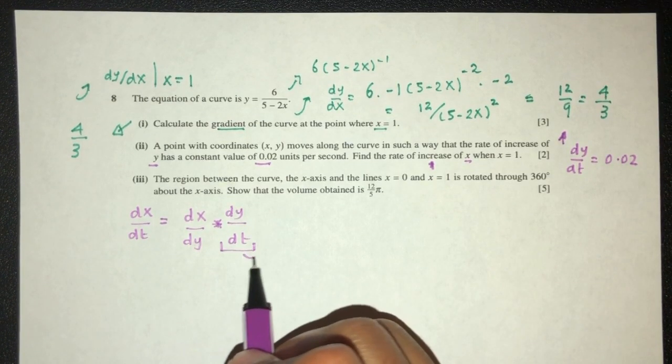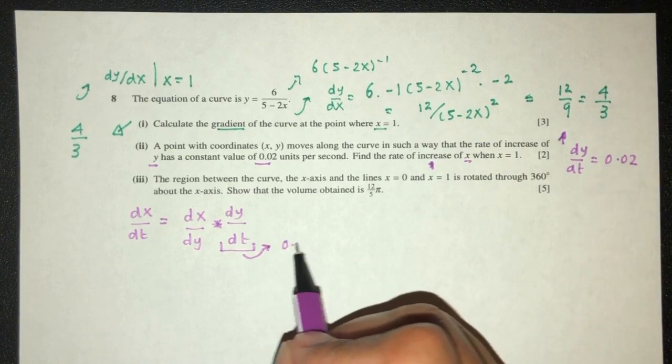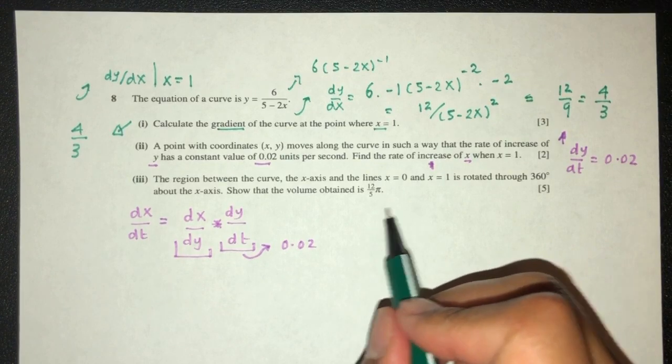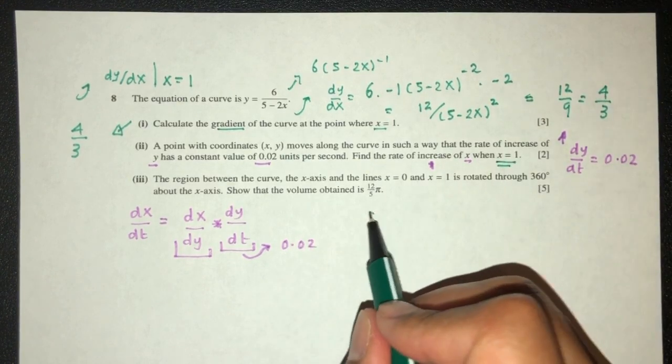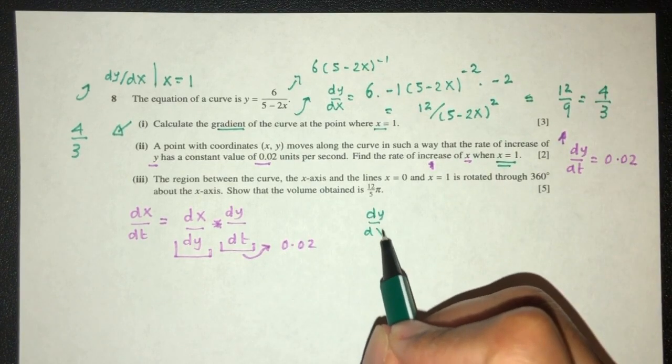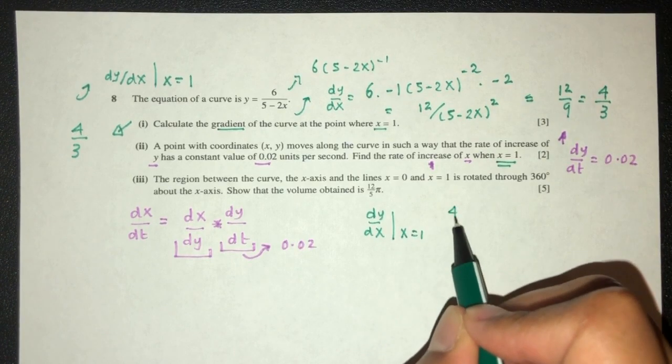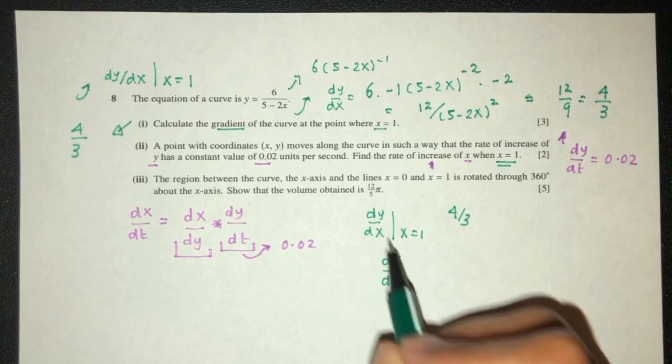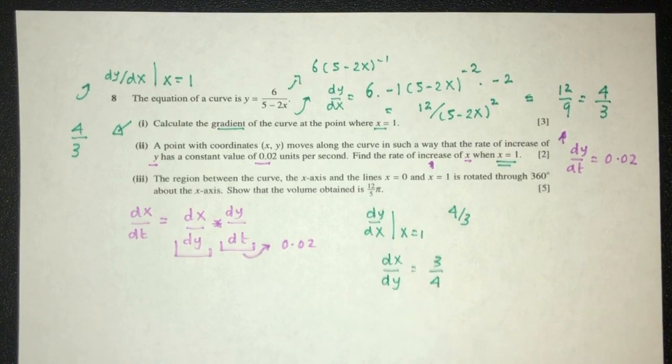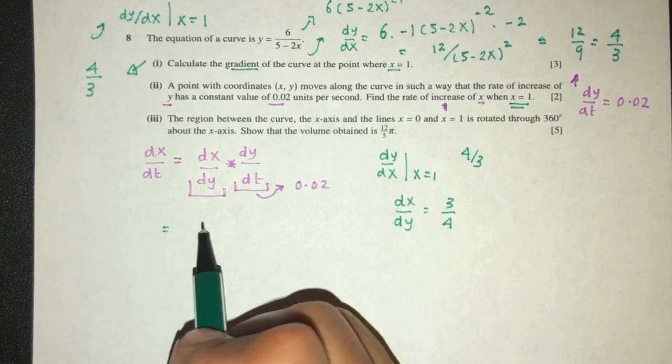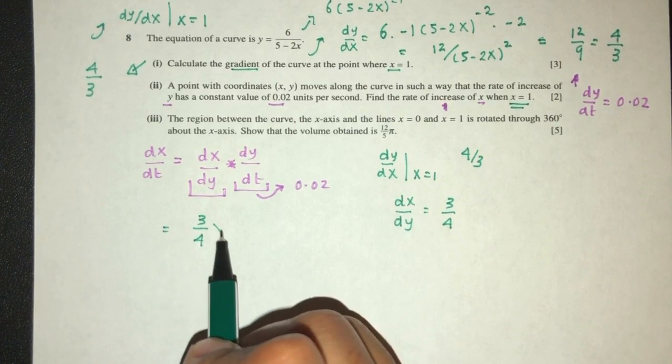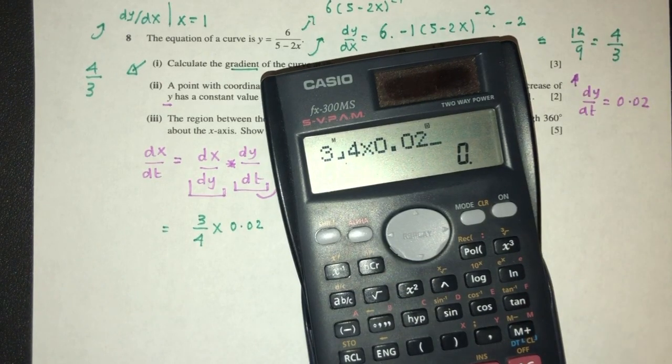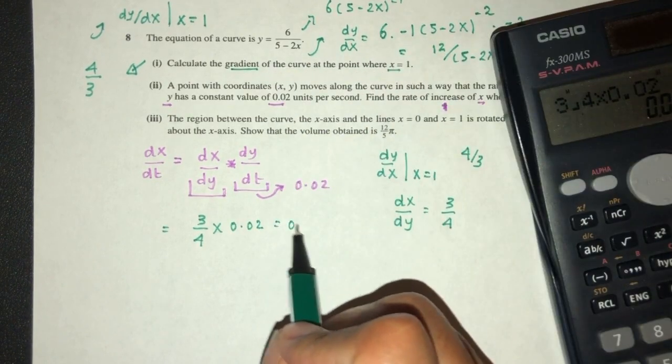Now dy/dt, we know already, is 0.02. So we have to find dx/dy. At this value, we know that dy/dx equals 4/3. However, dx/dy, we just have to reverse this, will be 3/4. So we place back in the main equation. That should be 3/4 times 0.02, which equals 0.015.